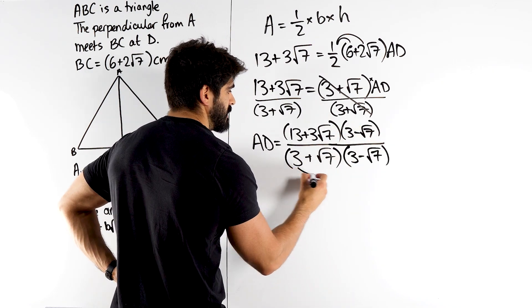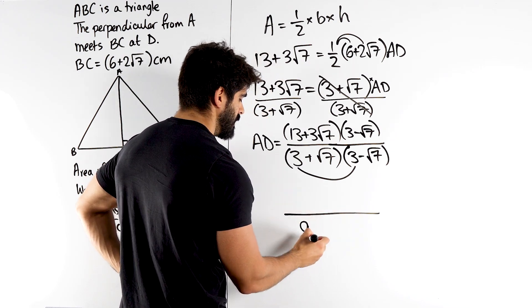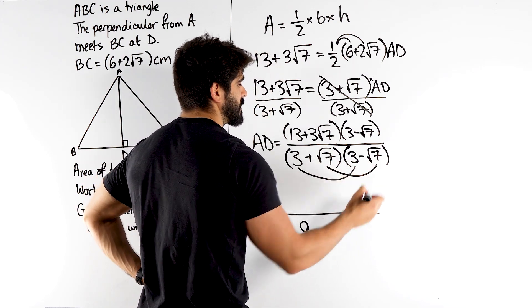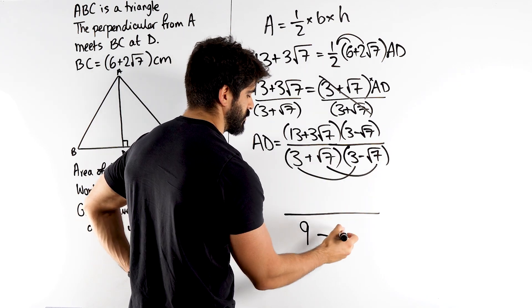And then all you need to show is 3 times 3 is 9. Minus root 7 times root 7 is 7. Yeah, because you're squaring root 7. When you square root, it cancels.